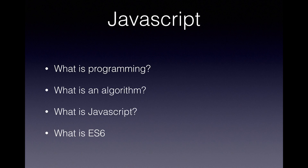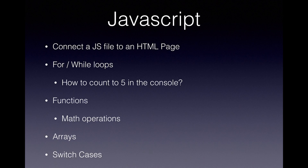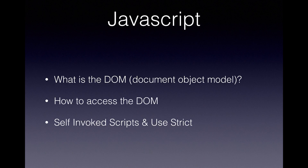Once you've got HTML and CSS down, look at what JavaScript is. But before that, look at what programming is, what an algorithm is, what the JavaScript language is, and what ES6 is — just google those and start reading. Then look at how to connect a JavaScript file into an HTML page, what for and while loops are, functions, math operations like addition, subtraction, division and multiplication, what arrays are, switch cases, what the DOM is, how to access the DOM, and self-invoking scripts and the use strict signifier in JavaScript.